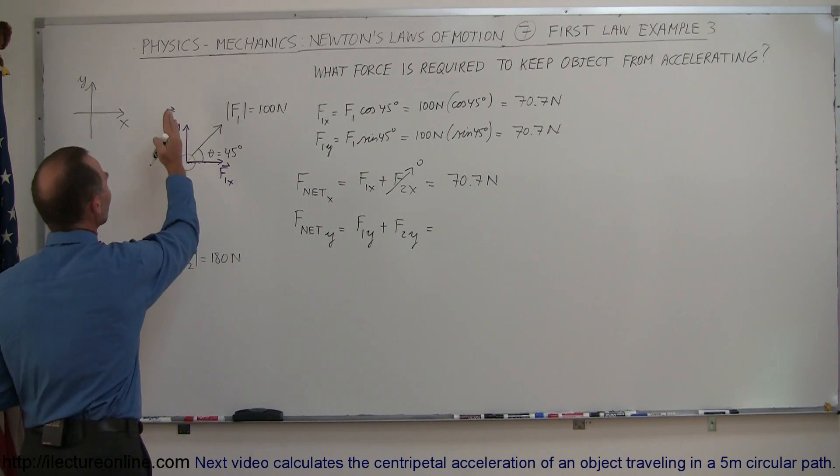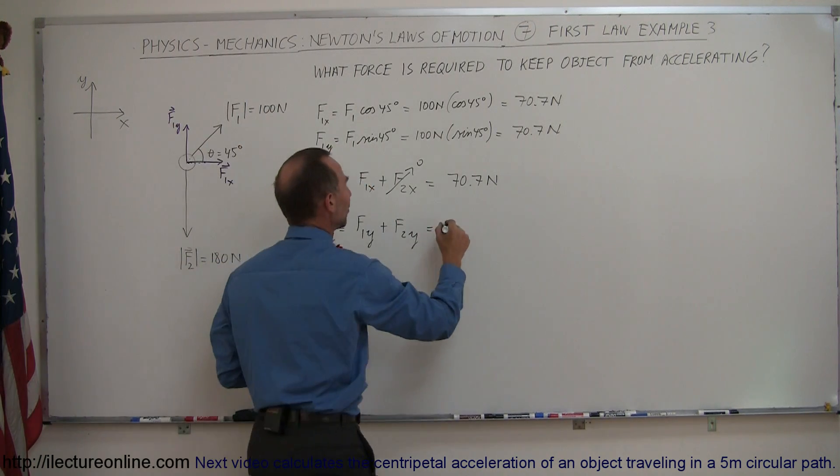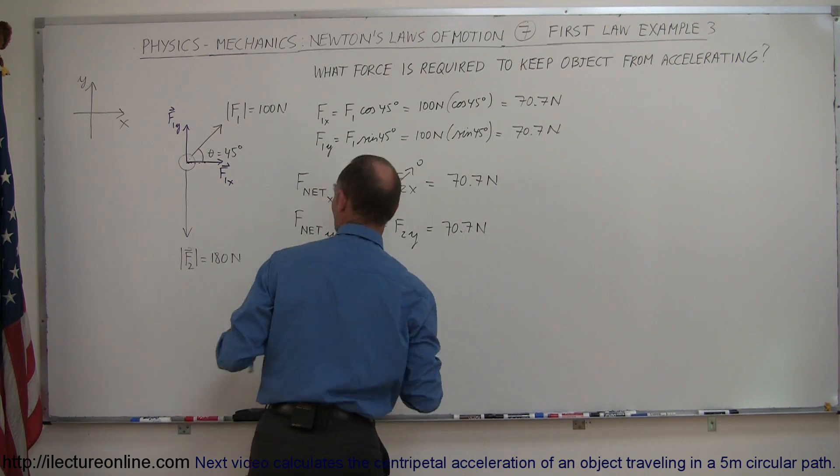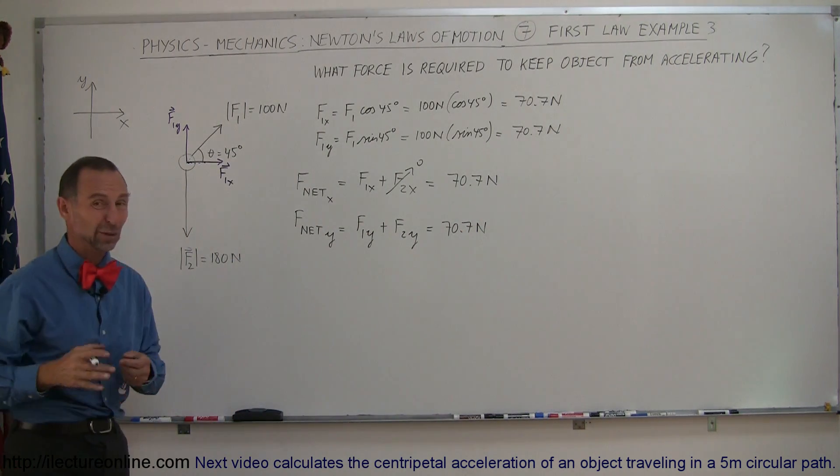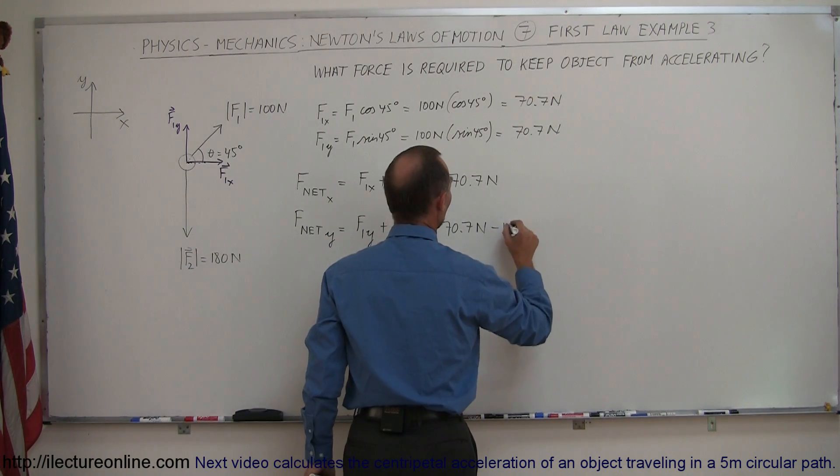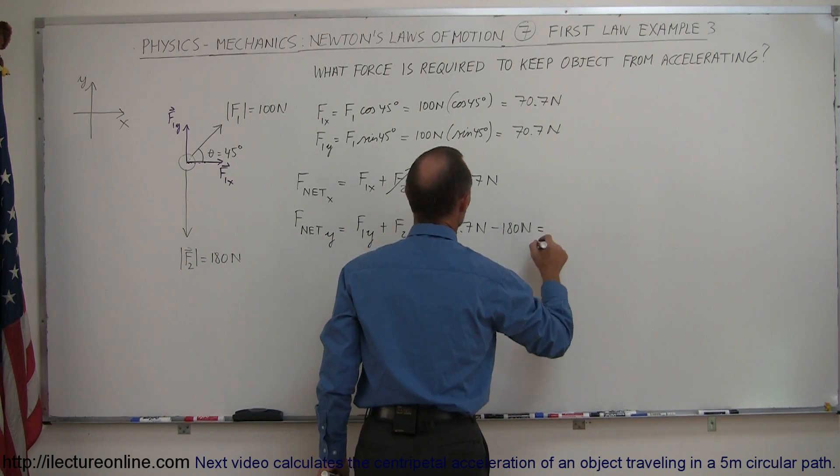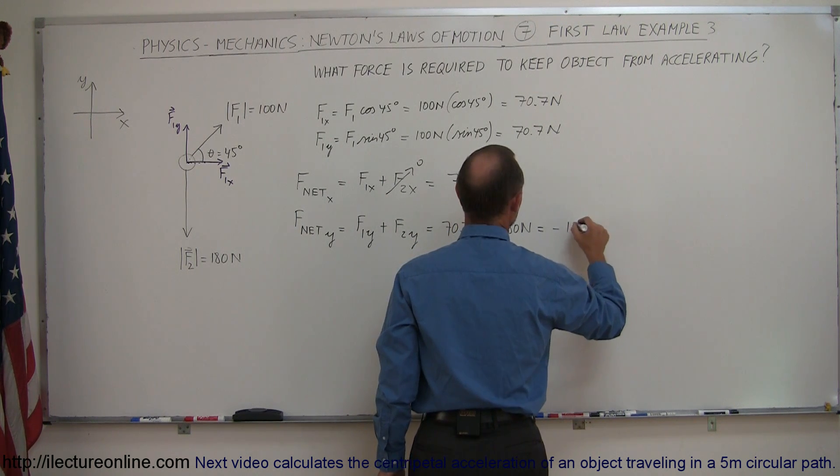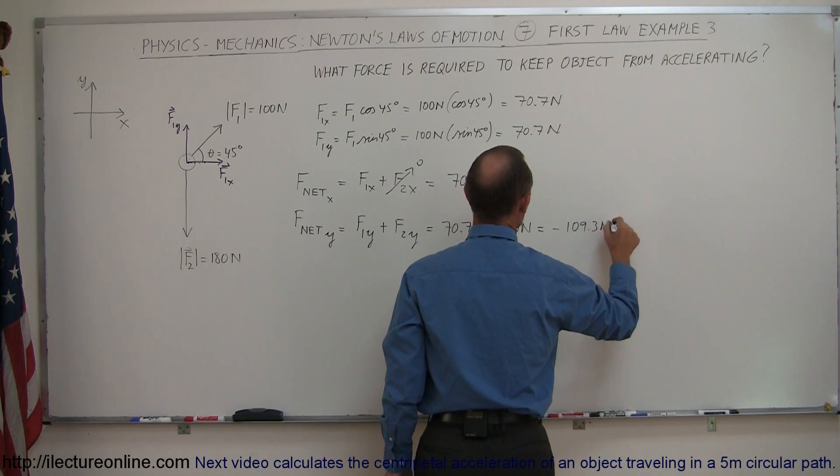F1Y is in the positive direction, so that's a positive 70.7 Newtons. But F2, the Y component, which is the only component F2, is in the negative Y direction, so we have to go minus 180 Newtons. So this is equal to minus 109.3 Newtons.